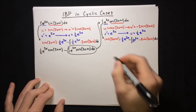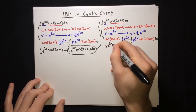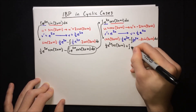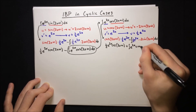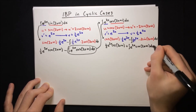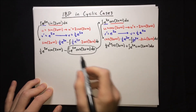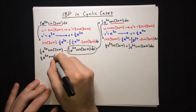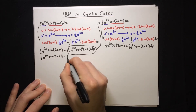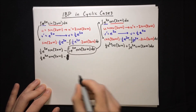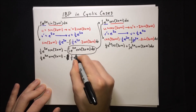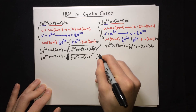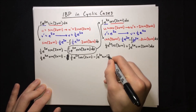Simplifying that second IBP result gives half e to the 2x cos(2x + 1) plus the integral of e to the 2x sine(2x + 1). Now we plug all of this back into the original expression. Distributing the negative sign, we get: half e to the 2x sine(2x + 1), minus half e to the 2x cos(2x + 1), and then minus the integral of e to the 2x sine(2x + 1).